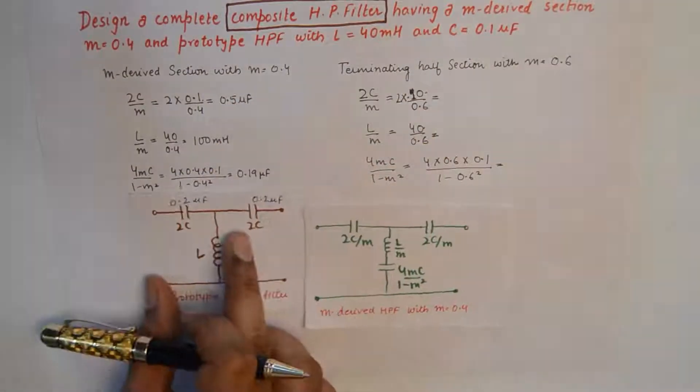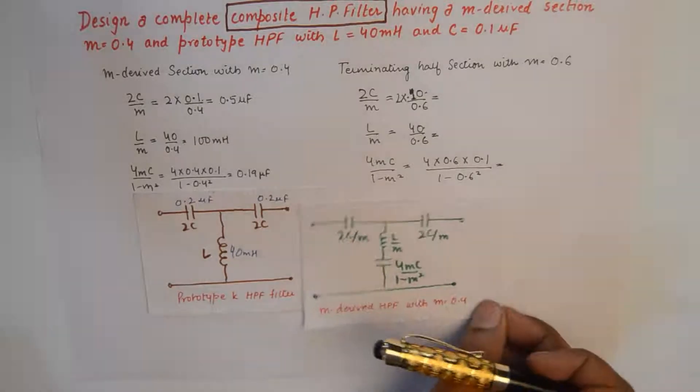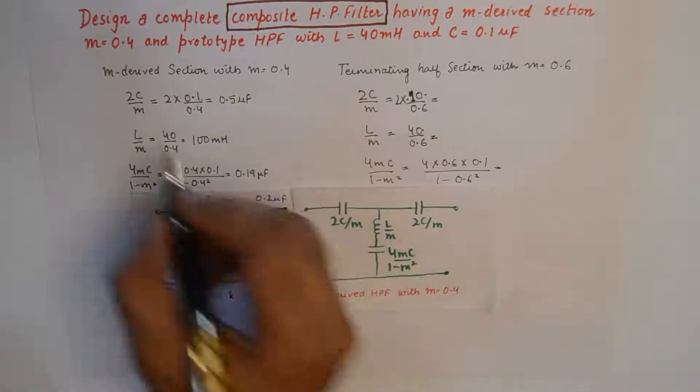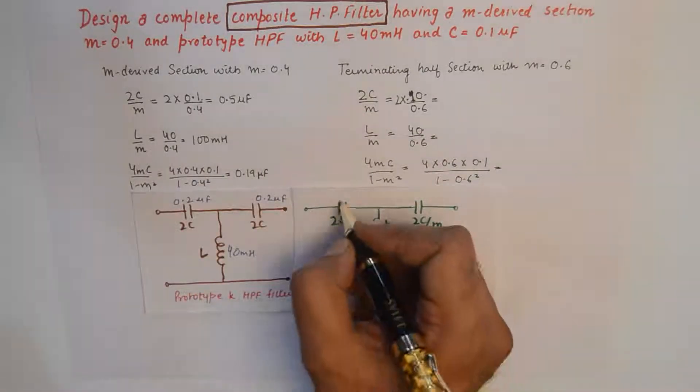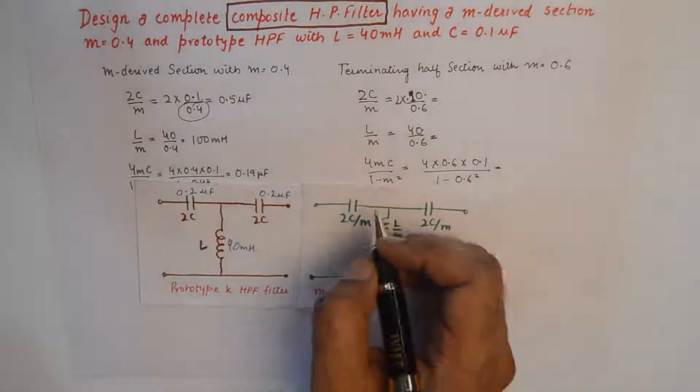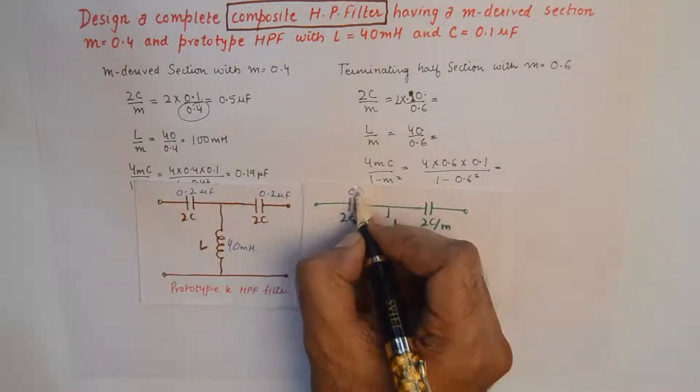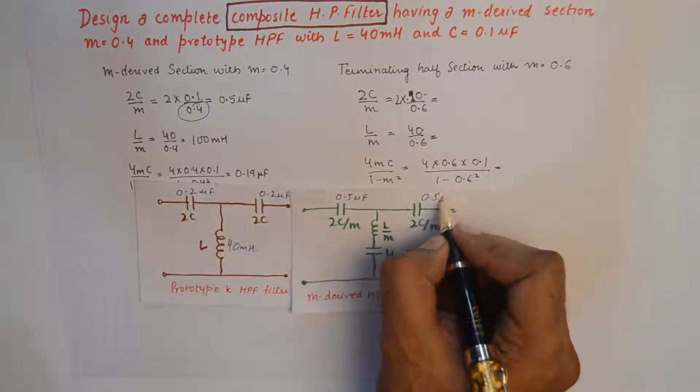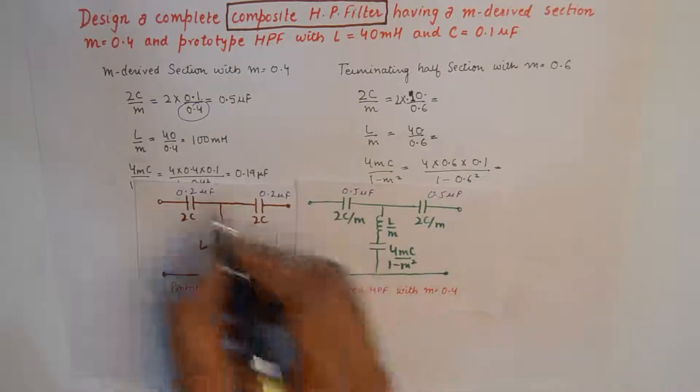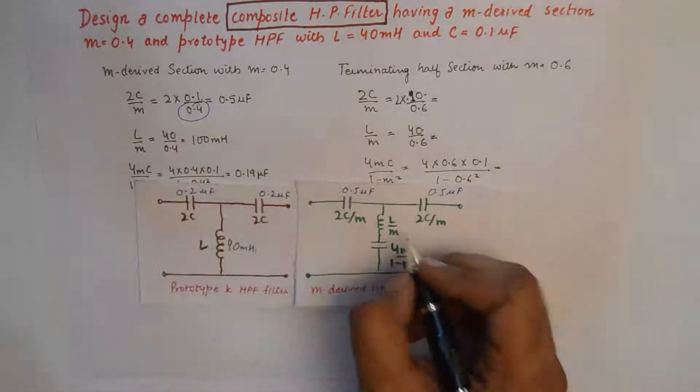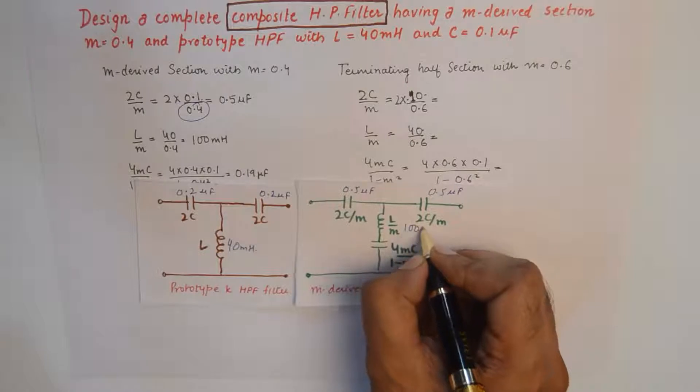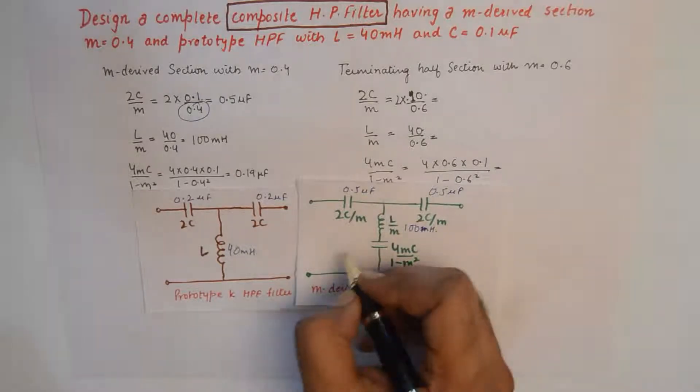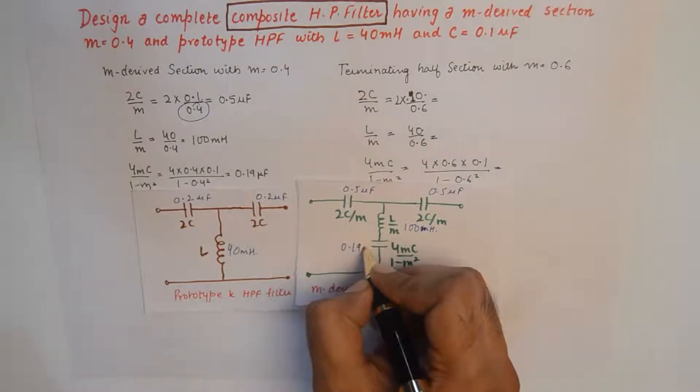Then what we have here is the M section with M equal to 0.4. For that, 2C by M has been calculated with M equal to 0.4, so this value is 0.5 microfarad, and this value again will be 0.5 microfarad. Now L by M with M equal to 0.4 is also calculated, so this is 100 millihenry, and this is going to be 0.19 microfarad.